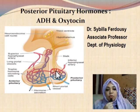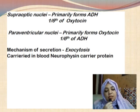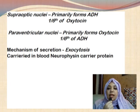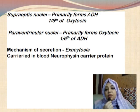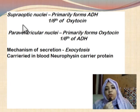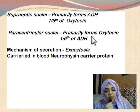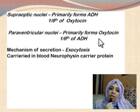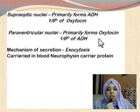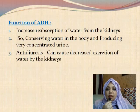They are secreted into the blood by the process of exocytosis. The supraoptic nuclei of the hypothalamus primarily forms the anti-diuretic hormone, and one-sixth of oxytocin. The paraventricular nuclei of the hypothalamus primarily forms oxytocin and one-sixth of ADH. After being synthesized, when they come into the posterior pituitary gland they are secreted by exocytosis, and in the blood they are transported by loosely binding with a carrier protein known as neurophysin.